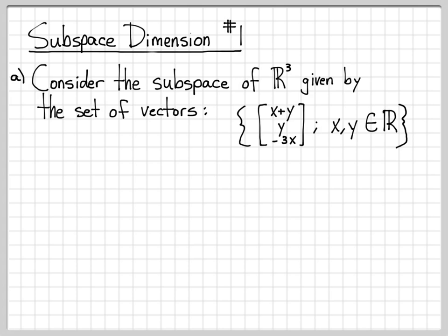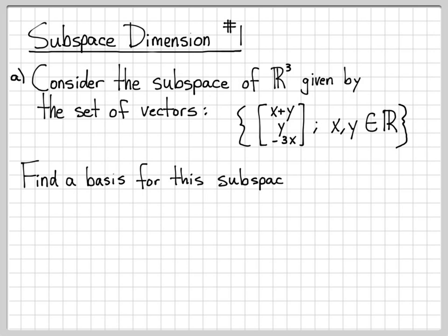So pick any x and any y in the reals and form the vector with first coordinate x plus y, second coordinate y, and third coordinate minus 3x. There are an infinite number of choices for x and y, so there are an infinite number of vectors of this form. That entire set is what we mean by the subspace of R3. What we're going to do is find a basis for this subspace, and once we have the basis, it'll be easy to determine the dimension.